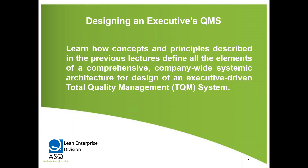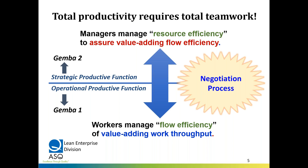You can call it business excellence if you want to — we're not talking about ISO 9000 and daily management here, we're talking about the executive components. I've talked before about Gemba One and Gemba Two. Gemba One is the operational production function. Gemba Two is the strategic productive function. In Gemba Two, managers are managing what we call resource efficiency.